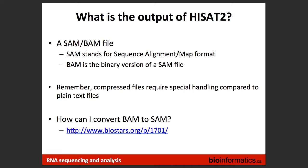The output of HiSat2 is a SAM or BAM file. SAM stands for Sequence Alignment Map format — it's essentially a text file where for every read you aligned from the FASTQ, you get that read plus extra information: where it aligns and the quality of the alignment. The BAM file is the binary version of SAM, saving a lot of space. It's highly recommended to keep all alignments in BAM format. You can convert between BAM and SAM using tools like SAMtools.